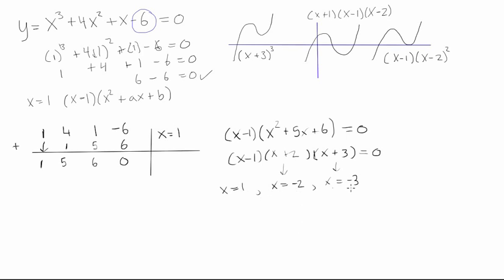So there you go. Those are the three x-intercepts of this equation. And basically, if we wanted to graph it, it would just look like... Well, let's see. One of our x-intercepts would be at 1, one would be at -2, and one would be at -3.